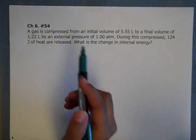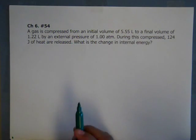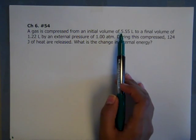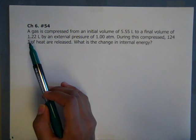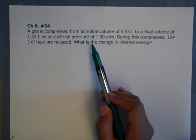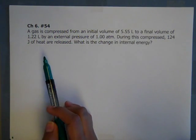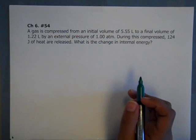So our first problem from chapter 6 is going to be number 54 in the back of the book, and it's an energy transfer problem. It's saying that the gas was compressed from an initial volume of 5.55 liters to a final volume of 1.22 liters at a pressure of 1 atmosphere. And during this compression, 124 joules of heat were released. So it's asking us to find the change in internal energy.